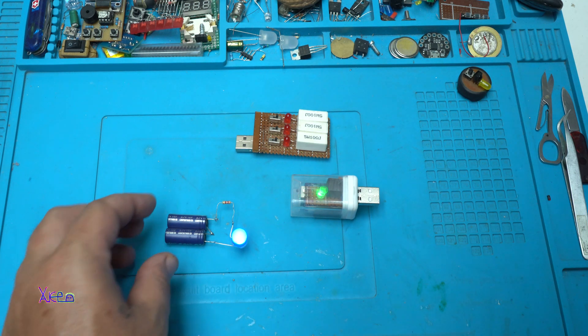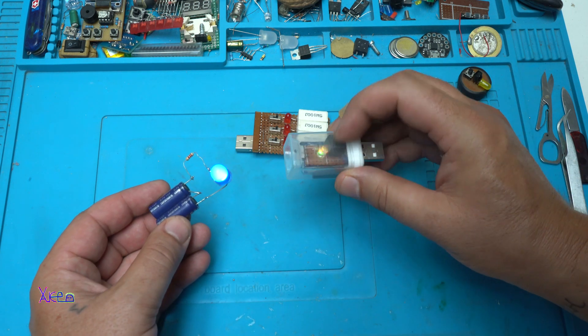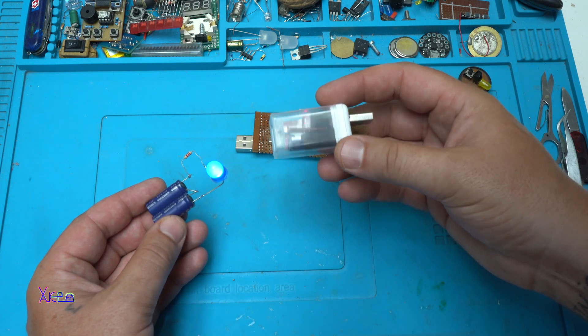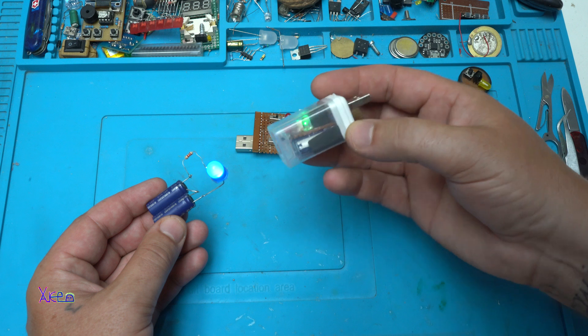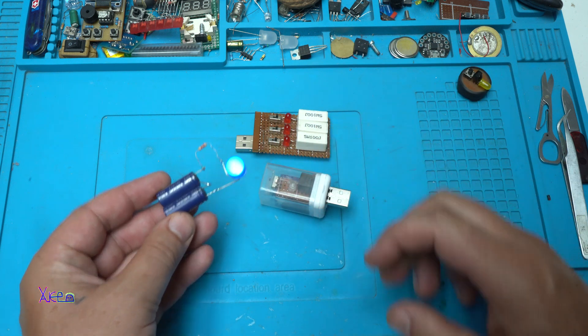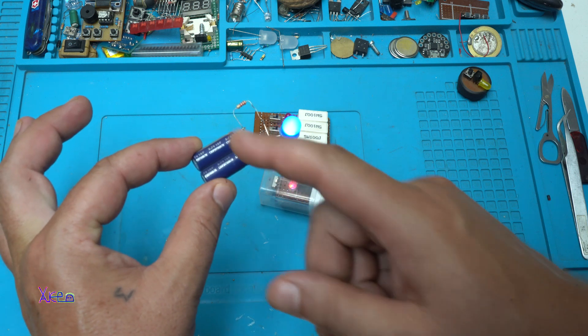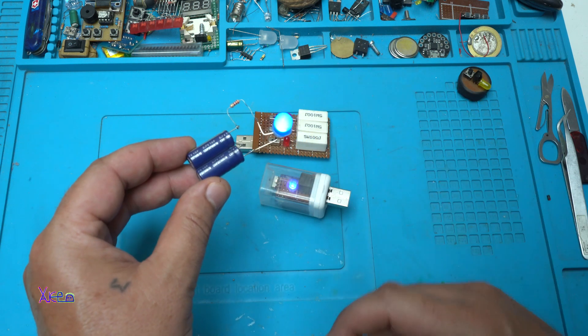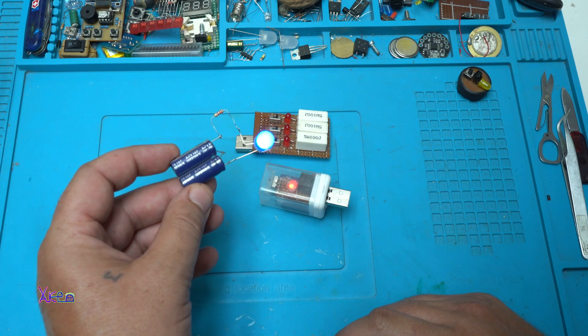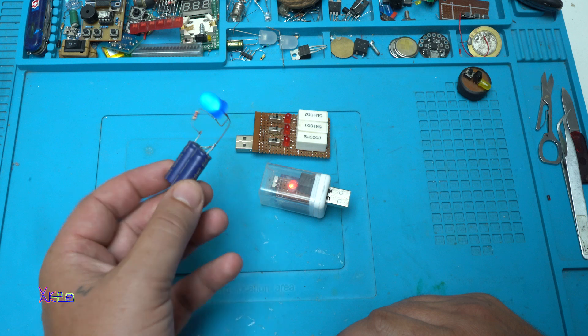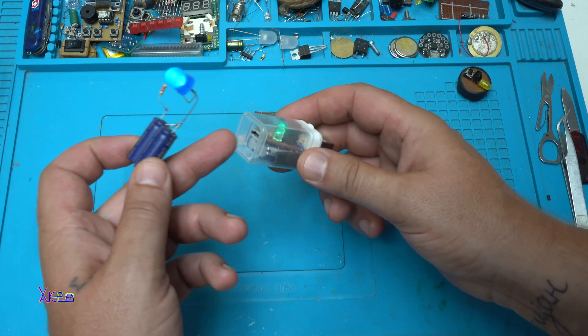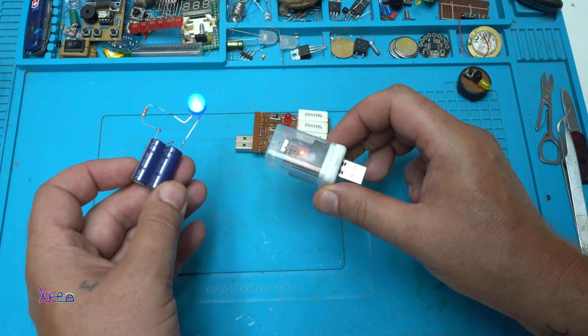And if you are wondering why this RGB LED is blinking, this is my latest mini USB emergency light. It's made just like this: I'm using two super capacitors, a resistor, and the LED, and this will work for about 6 to 10 hours. If you didn't watch my video about this please check my channel and watch it.